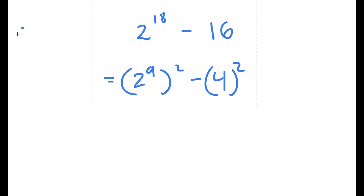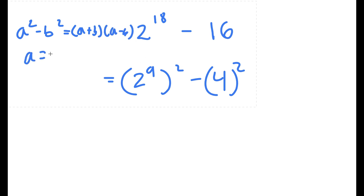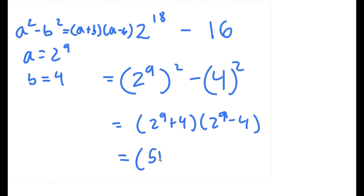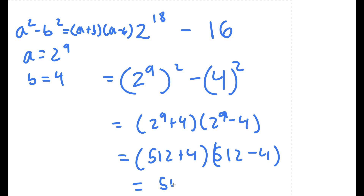Using the difference of squares formula a squared minus b squared equals a plus b times a minus b, where a is 2 to the power of 9 and b is 4, this equals 2 to the power of 9 plus 4 times 2 to the power of 9 minus 4. Since 2 to the power of 9 is 512, I have 512 plus 4 times 512 minus 4, which is 516 times 508.